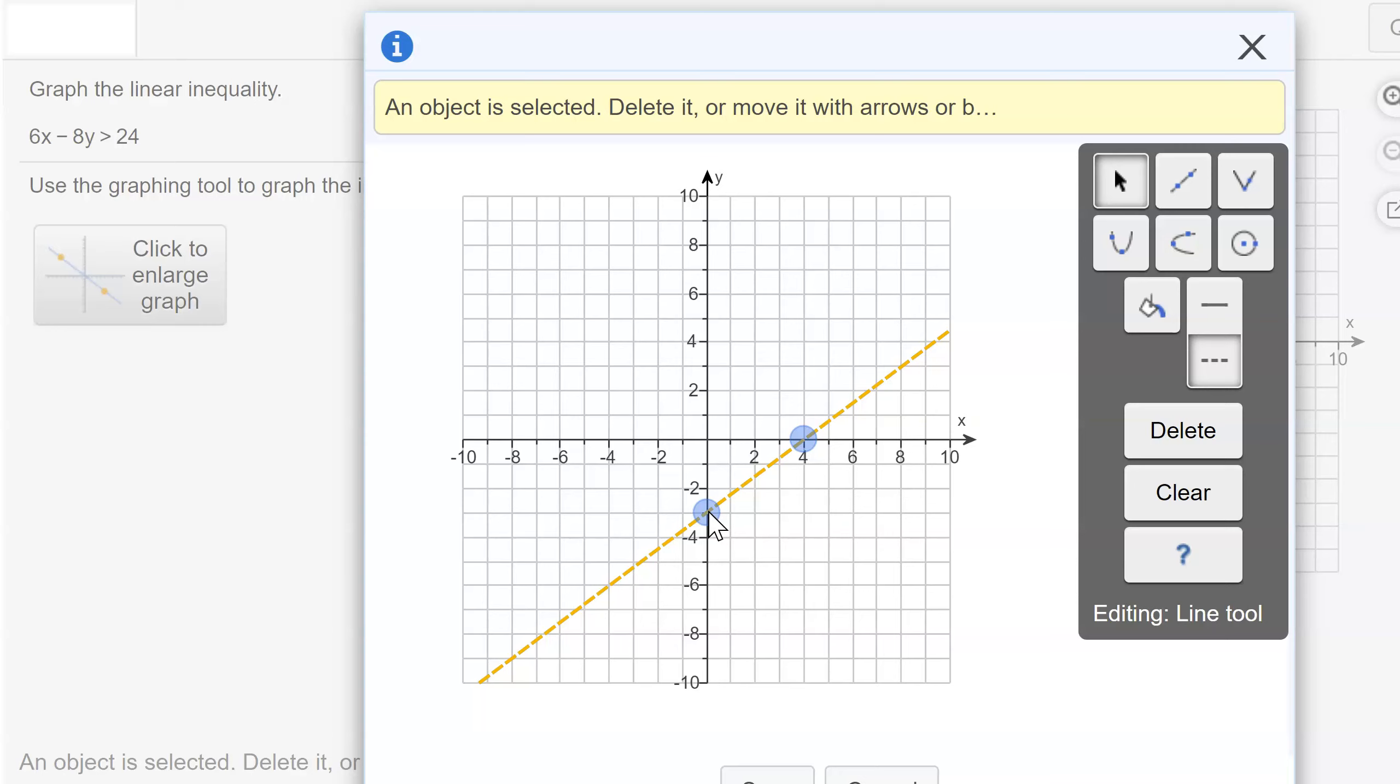Now I need to decide: am I going to shade above it or below it? Using the test point method, I need to pick a point that is not on my line. The most efficient point to pick is (0, 0). It's not on my line in this case.